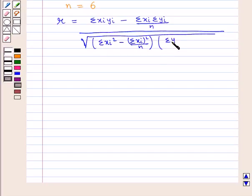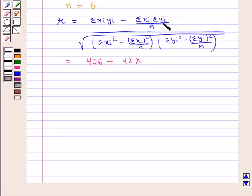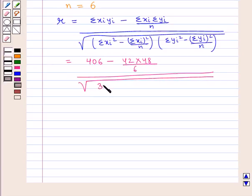which is equal to summation xi yi is 406 minus summation xi is 42 into summation yi which is 48 by 6, whole upon square root of summation xi square that is 364 minus summation xi whole square that is 42 square by 6, into summation yi square that is 454 minus summation yi whole square that is 48 square by 6.